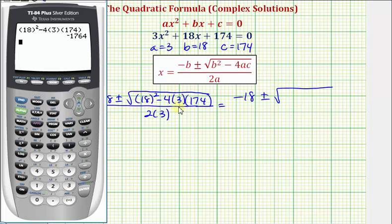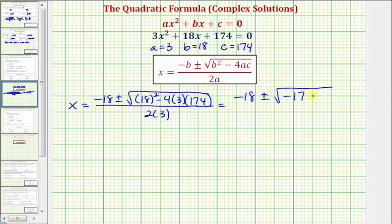So the discriminant, or the radicand, is negative 1764. Notice how because the radicand is negative, we know we're going to have two complex solutions. Our denominator is two times 3, which is 6.